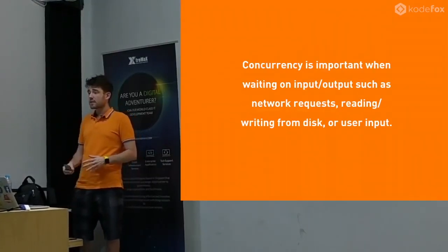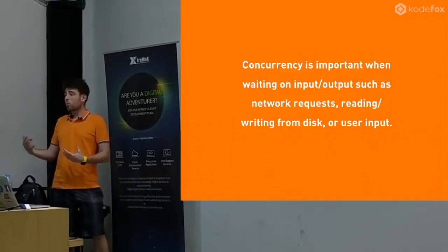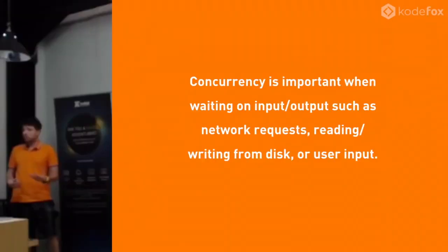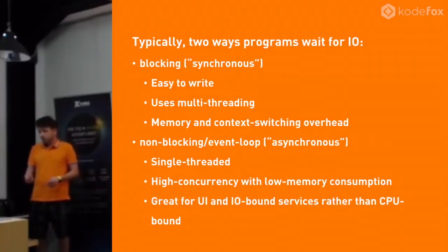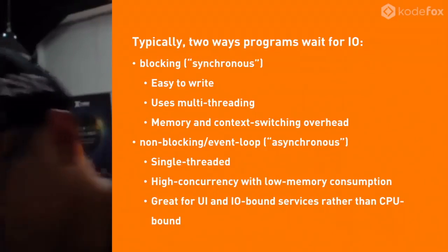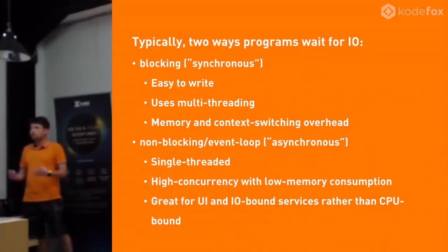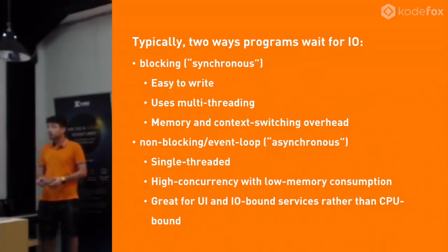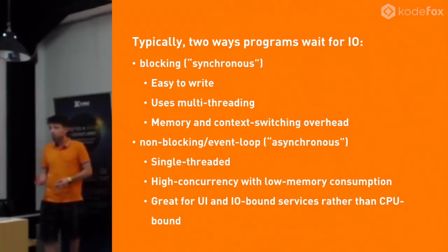Anything that is considered asynchronous activity - something where the CPU needs to stop and wait for the user to do something, or the CPU needs to stop and wait for some data to arrive from the database or the network. There are typically two ways for a program to do those kind of IO tasks. The first is the blocking or synchronous style, which is easy to write. It's what PHP, Ruby, Python, and most server-side technologies use. And in order for that to work, we need multi-threading.